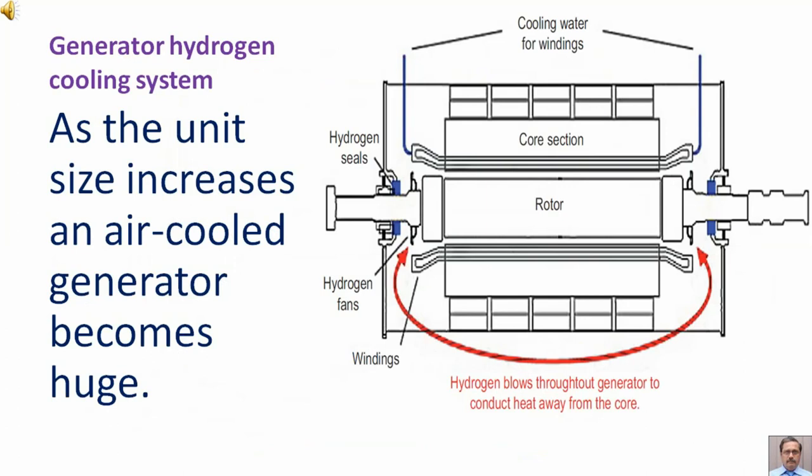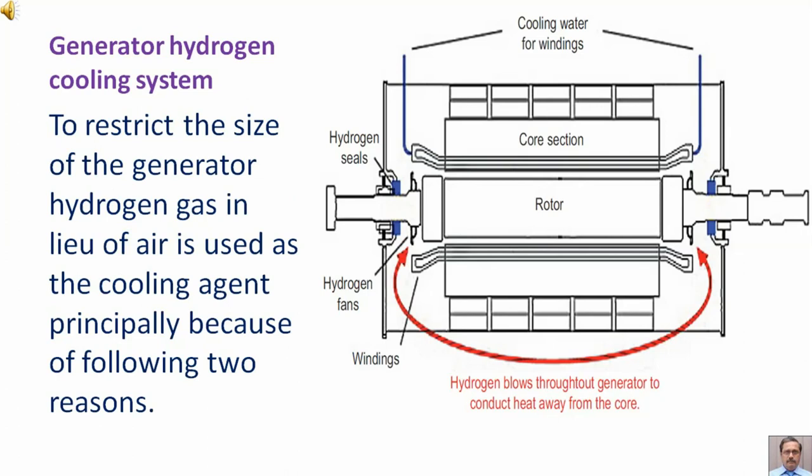Generator hydrogen cooling system. As the unit size increases, an air-cooled generator becomes huge. To restrict the size of the generator, hydrogen gas in lieu of air is used as the cooling agent, principally because of following two reasons.